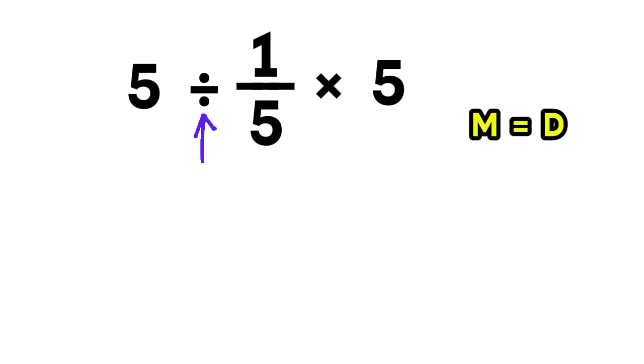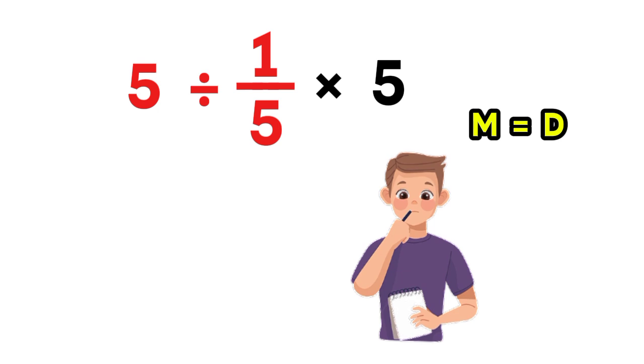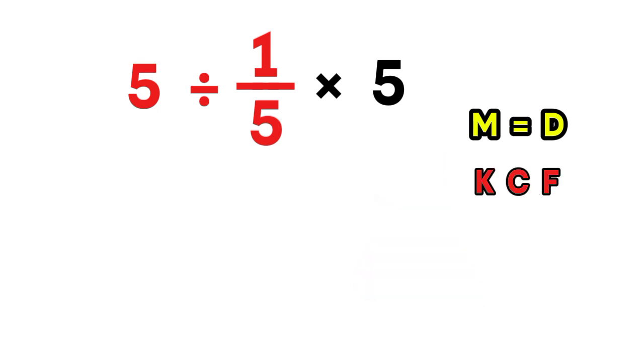So step 1. Focus on the division. We have 5 divided by 1 over 5. Now here comes the twist, the moment where most people say, Wait, what just happened? Whenever we divide by fraction, we use the KCF rule. K stands for keep. C stands for change. And F stands for flip.